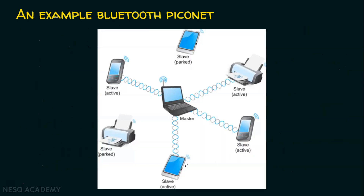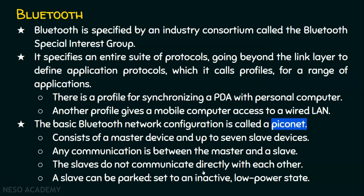For example, if a PDA device wants to communicate with a mobile phone — both being active slave devices — they cannot communicate directly; they must go through the master. Additionally, a slave can be parked, meaning it can be set to an inactive low-power state. Since Bluetooth devices draw power from batteries, putting inactive devices into low-power state helps conserve battery life.